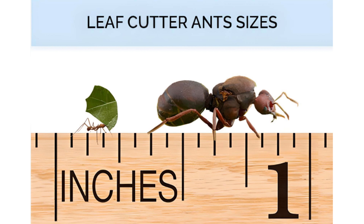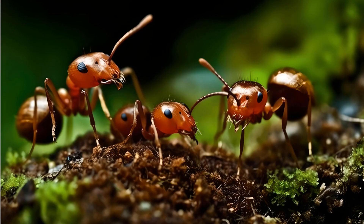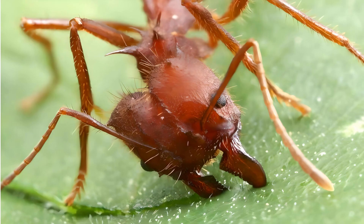Ants have four life cycle stages: egg, larval, pupae, and adult. The queen has to take care of her first brood alone, feeding the larvae with unfertilized eggs that she lays for this purpose. Once the first metamorphosis is complete, the young workers help the queen raise the next generation of ants and develop the fungal garden. The queen can live up to 30 years.